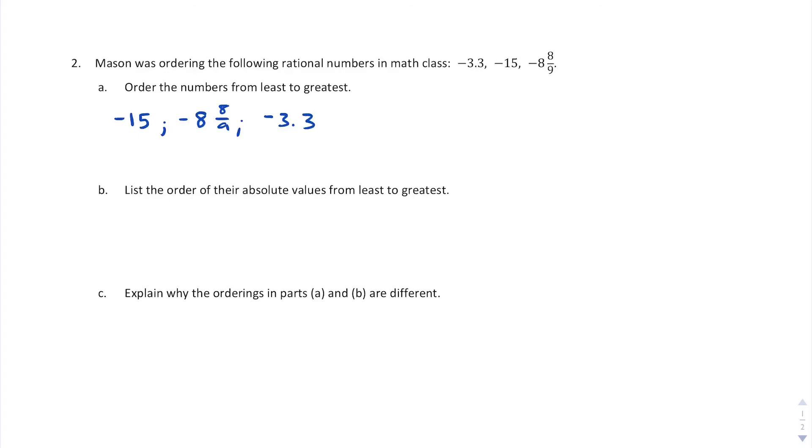Question B. List the order of their absolute values. Well, the absolute value of negative 15 is 15. The absolute value of negative 8 and 8 ninths is 8 and 8 ninths. That's how far away negative 8 and 8 ninths is away from zero. And the absolute value of negative 3.3 is 3.3. If I want to list them from least to greatest, notice that I actually now have to flip the order. So my official answer is going to be right over here. I'm going to use 3.3 first, followed by 8 and 8 ninths, followed by 15. There is my official answer from least to greatest.